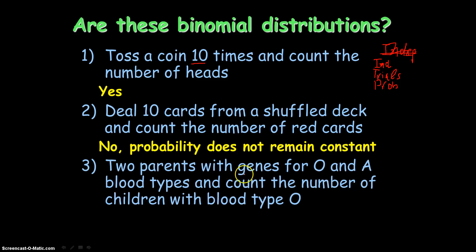Let's try one more. Two parents of genes for O and A blood types count the number of children with blood type O. Again, no fixed number. No fixed numbers of trials, so it can't be binomial.